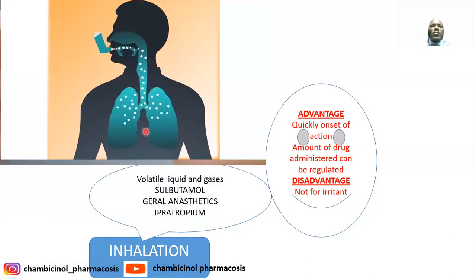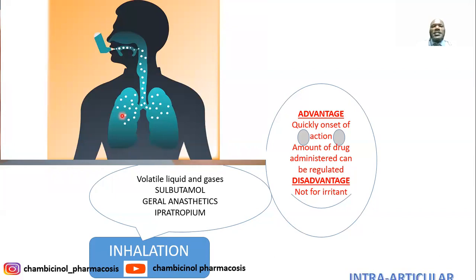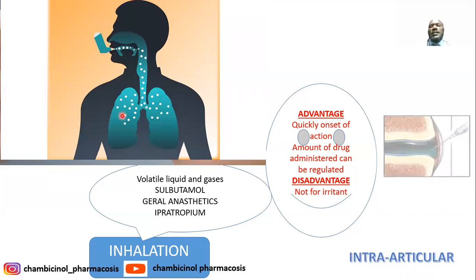Another image shows the distribution of drug once absorbed through the inhalation route — it distributes into the lungs and absorption occurs at the vast surface at the base of the alveoli. First onset of action is very important when the drug is taken through inhalation.